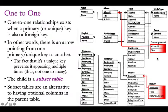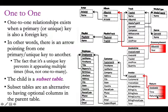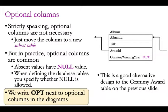The Grammy Award table could instead have been an optional column in the album table, but the subset table approach is useful when the information is rare. Another example is a returns table for invoices — some orders have return information, some don't, with columns for return time and refund amount. This is optional information for a subset of invoices.